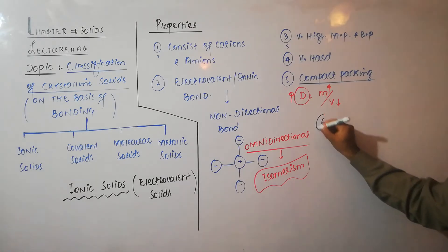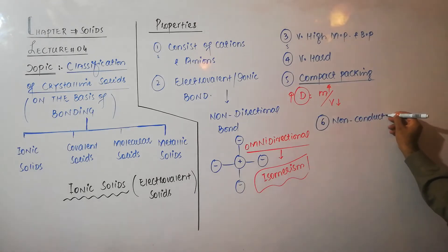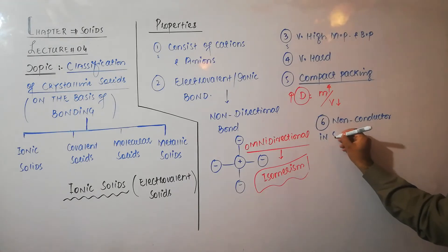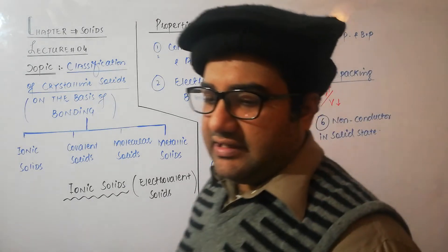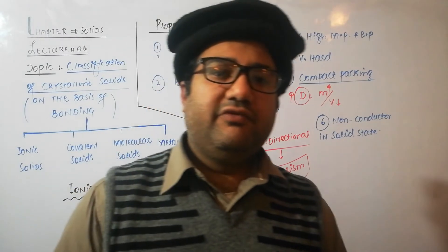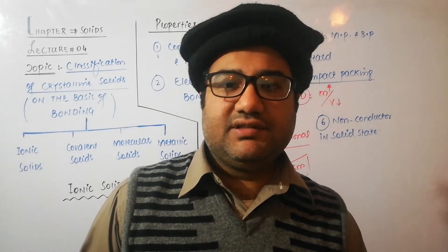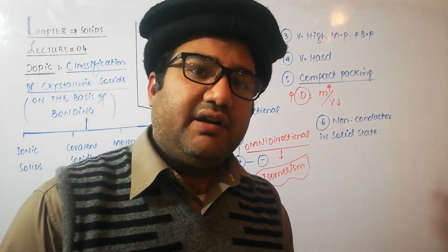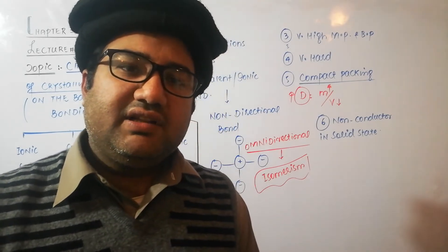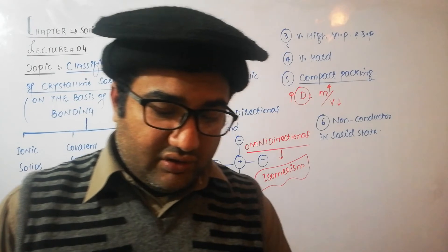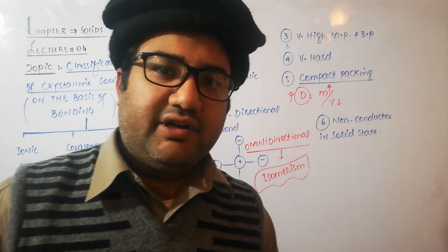Number six: ionic solids are non-conductors in the solid state. They do not conduct electricity when present in solid state. An important point: the non-conductivity of ionic solids is not because of the absence of free electrons. Free electrons are related to the conductivity of metals or in case of some non-metals like graphite, but free electrons have nothing to do with the conductivity of ionic solids.